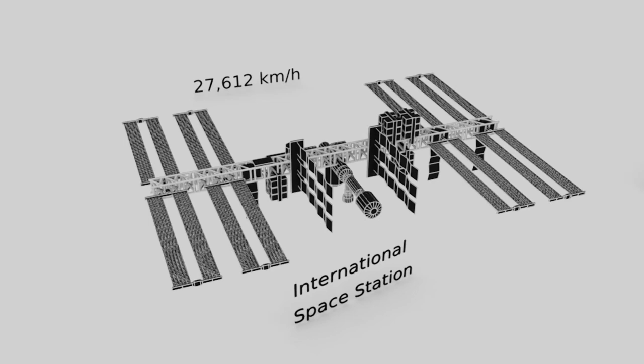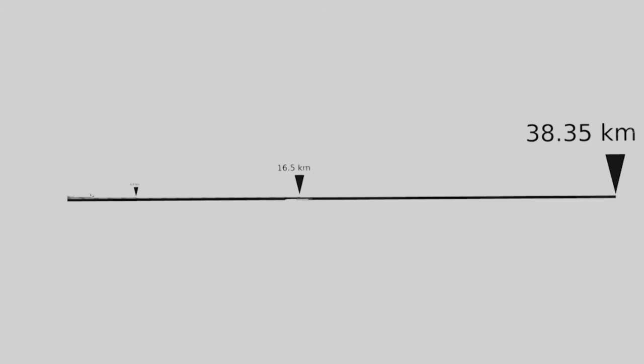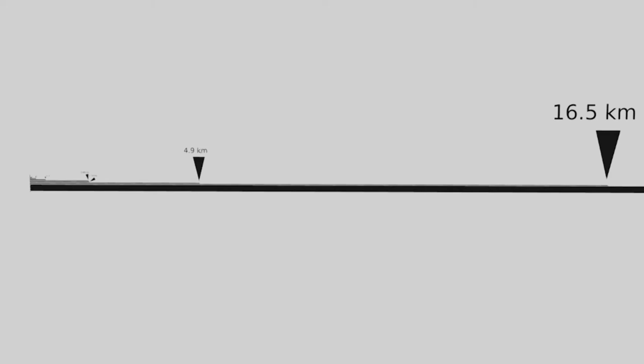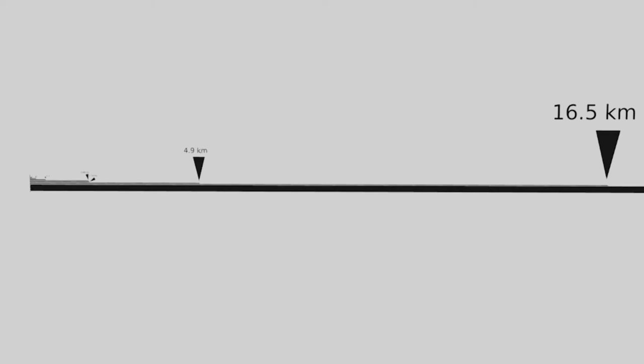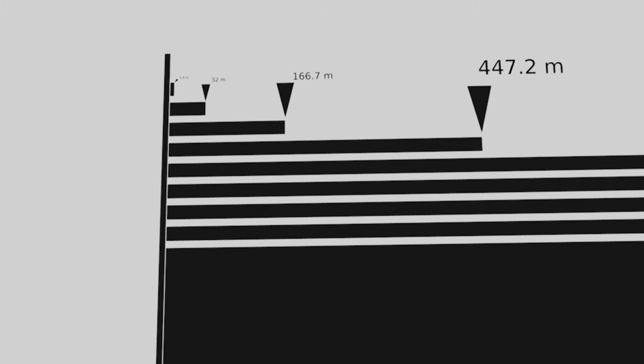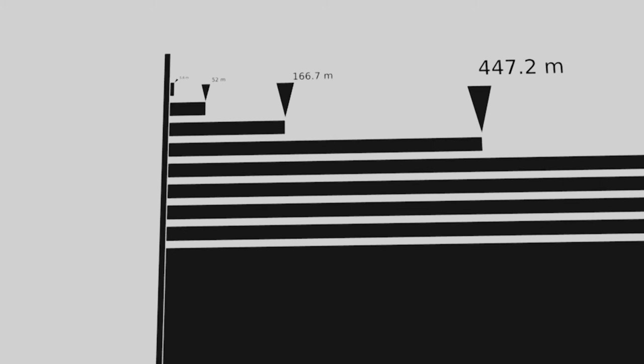How about a little race to see how far each of these can travel in 5 seconds? Let's see how far each of these went. In descending order, the space station traveled 38.35 km, the X-43A traveled 16.5 km, and the Blackbird was able to travel 4.9 km. The sound wave was able to get 1.716 km, and the Thrust SSC came in at 1.699 km. The falcon was able to dive 447.2 meters, and the cheetah was able to run 166.7 meters. Usain Bolt was able to sprint 52 meters, while this person, who is only walking at 4 km per hour, moved 5.6 meters. But how far did the snail make it? A grand total of 6.9 cm. Someone give that snail a medal.